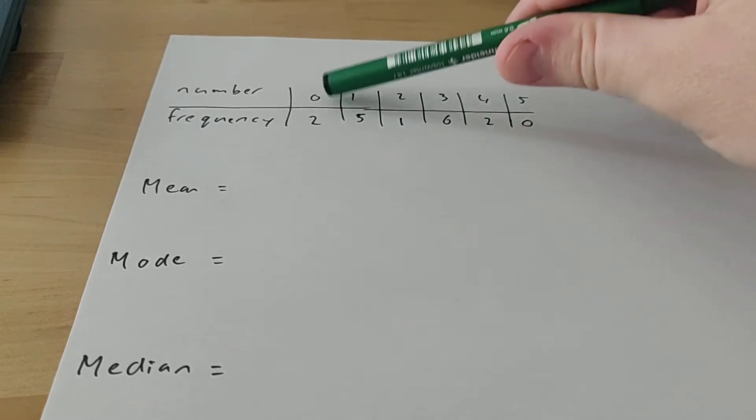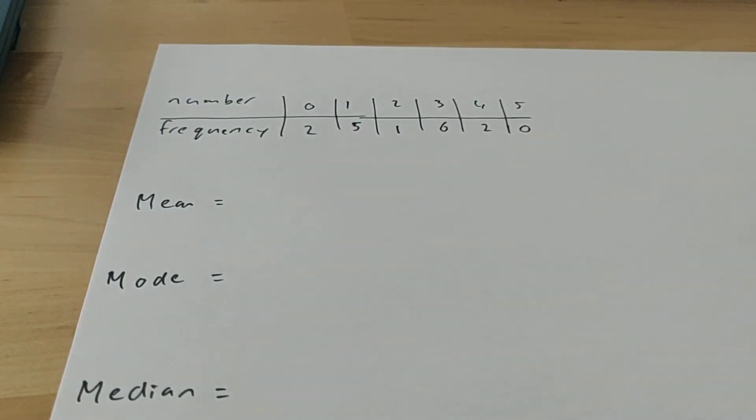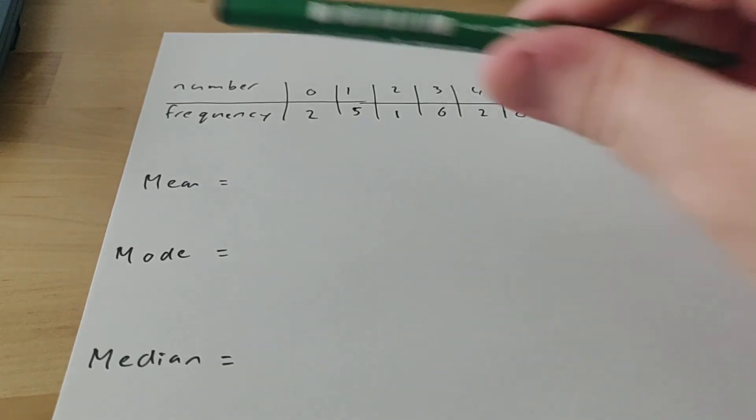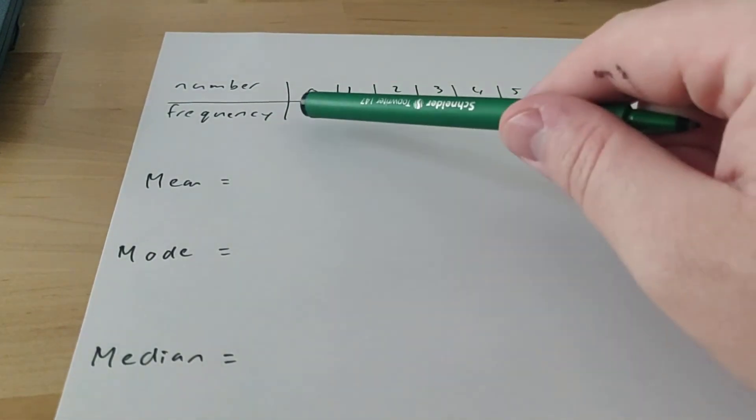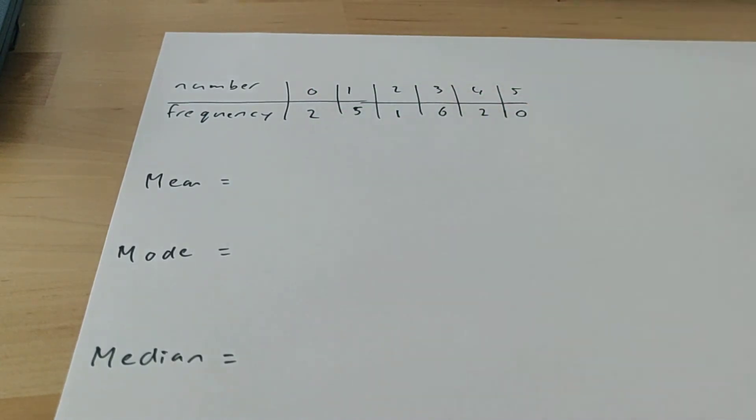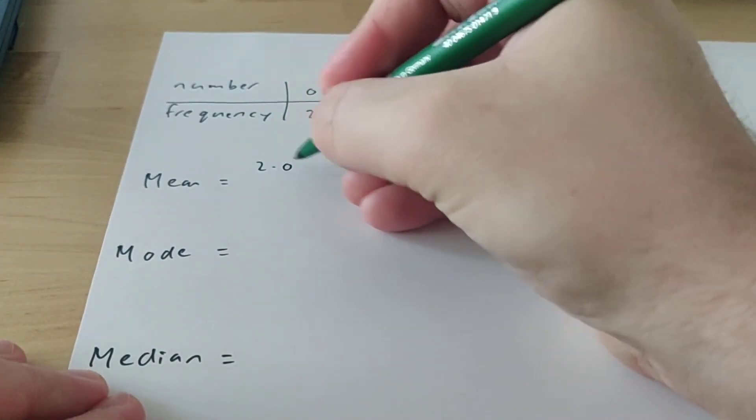So here I have the number 0 happens twice, the number 1 happens 5 times, etc. I want to tell you how to calculate the mean, mode, and median. The mean is also known as the average. So if you want to calculate that, you want to know the total numbers that you have, and then divide it by the total frequency. So 0 happened 2 times, so you're going to do 2 times 0.